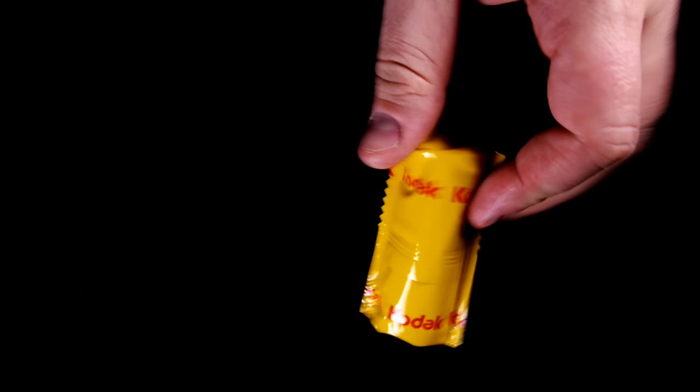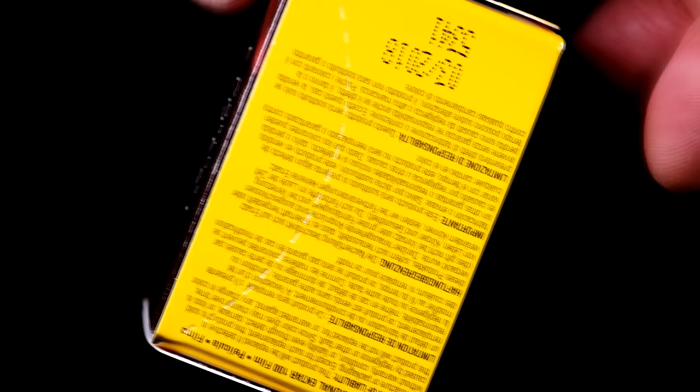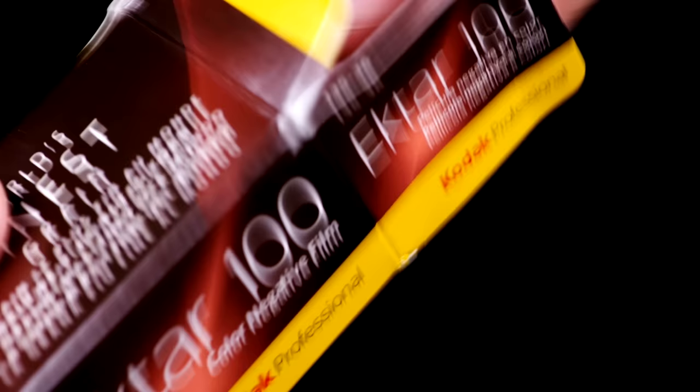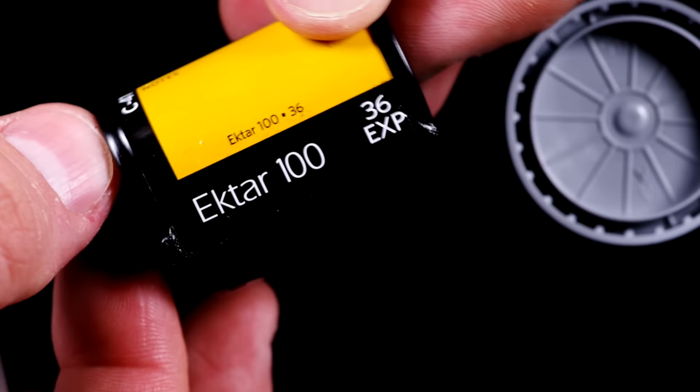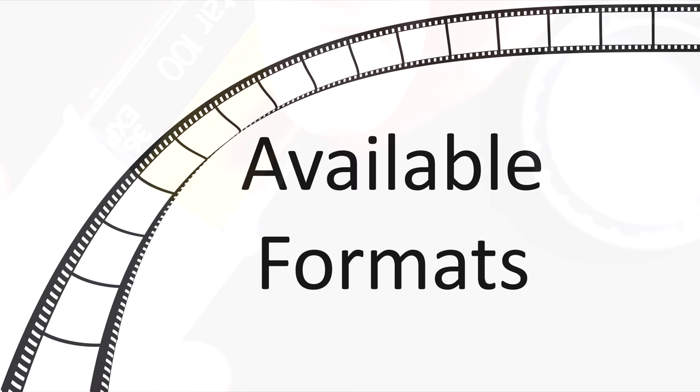Kodak Ektar is a 100 ISO film, but that's only true if you're shooting in daylight. If you're using Kodak Ektar indoors, it's different. Under 3,400 Kelvin studio lamps, Ektar is 32 ISO. Under 3,200 tungsten lamps, it's 25 ISO. So the warmer the light is, the slower Ektar is going to need to be rated indoors. We'll understand why when we look at the spectral sensitivity curve later in the video.